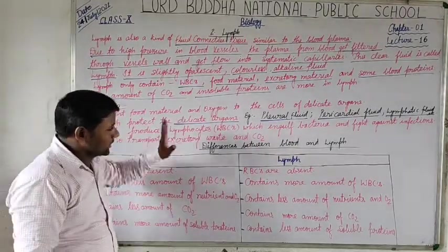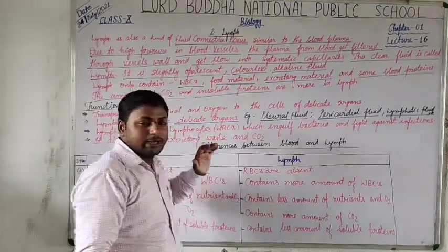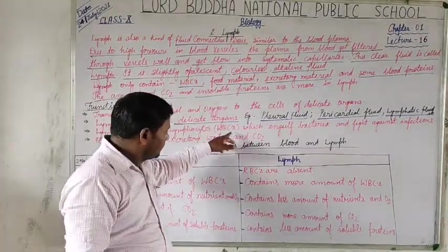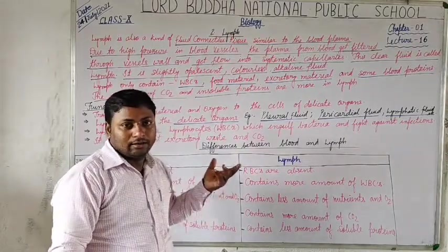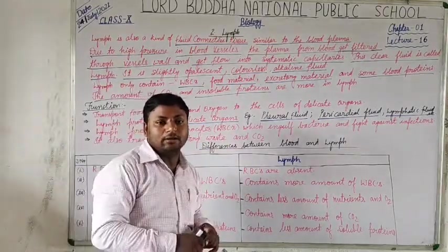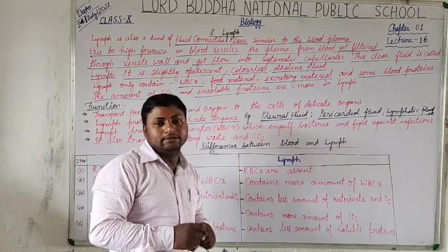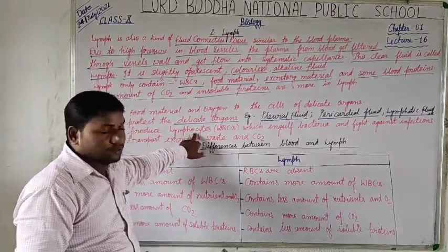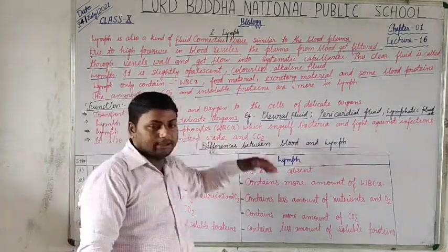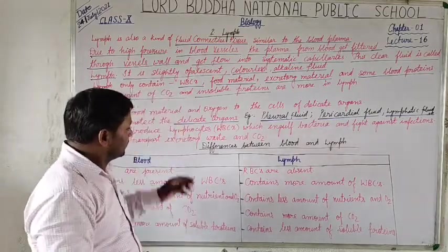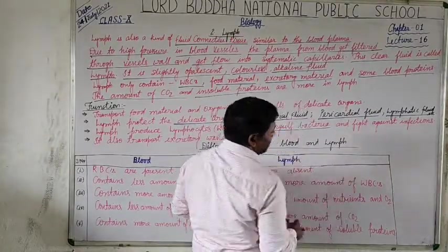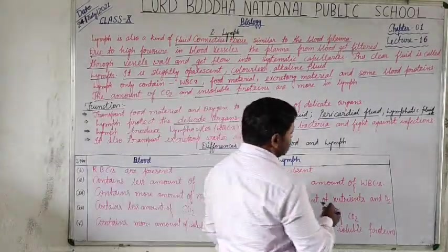Lymph produces lymphocytes. Lymphocytes are agranulocytes, which you have studied as part of WBCs in a previous lecture. Lymphocytes are called antibodies, and they help in the formation of immunoglobulins — different types of proteins. That is why they act as antibodies, engulf bacteria, and also fight against infectious diseases.